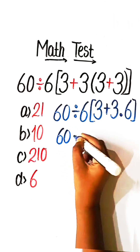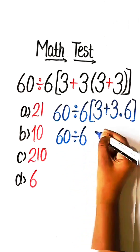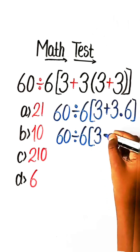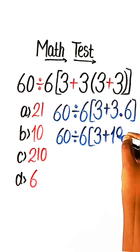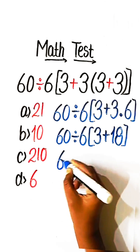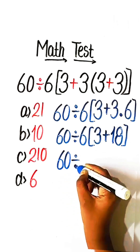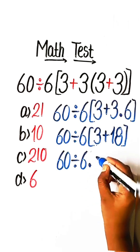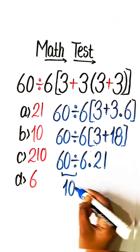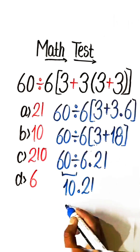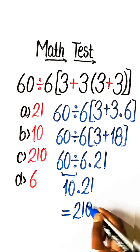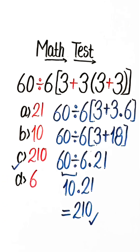Now we have 60 divided by 6, which gives us 3 plus 18. Then 60 divided by 6 is 10, multiplied by 21, which equals 210. So option C is our correct answer.